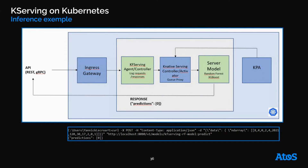With KFServing, you create a model and wrap it with Docker as a microservice. When a request is sent to the model server, it goes through an ingress gateway, then to the KFServing controller, which creates the service, the model server container, and logs all requests and responses. It is then transferred to the K-native service controller, which deploys the model server by attaching a queue proxy right next to it to manage traffic queues and expose metrics. Those metrics are supervised by the K-native Autoscaler (KPA), which monitors the traffic flow and scales replicas up or down to adapt to demand. Finally, the model makes an inference and returns the prediction.